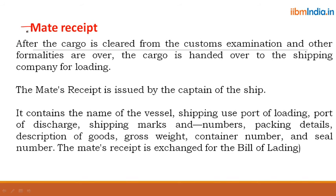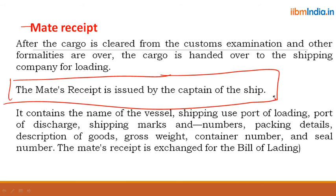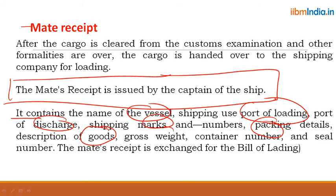After the cargo is cleared from customs examination and other formalities are complete, the cargo is handed over to the shipping company for loading. The mate receipt is issued by the captain of the ship and contains: name of vessel, shipping use, port of loading, port of discharge, shipping marks and numbers, packing details, description of goods, gross weight, container number, and seal number. The mate receipt is then exchanged for the bill of lading.